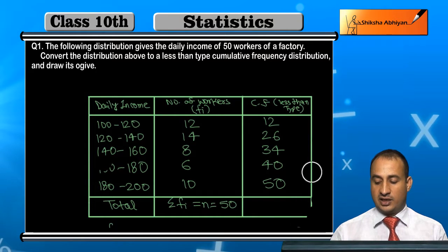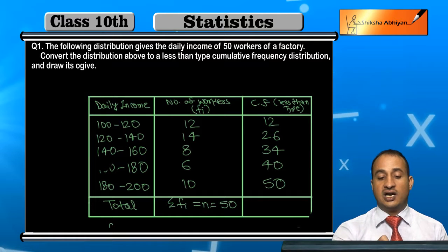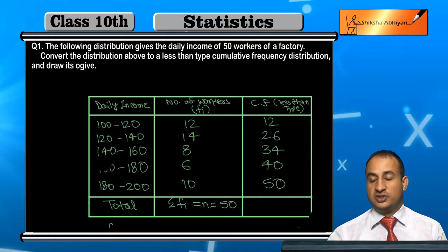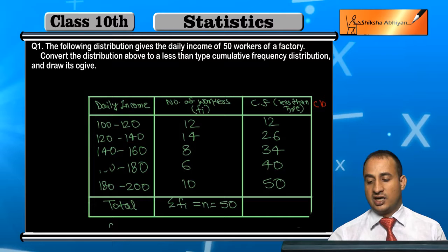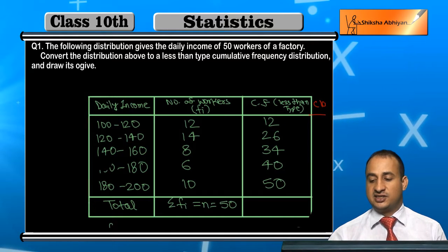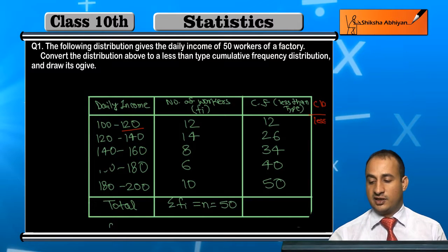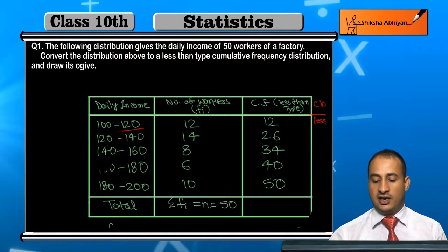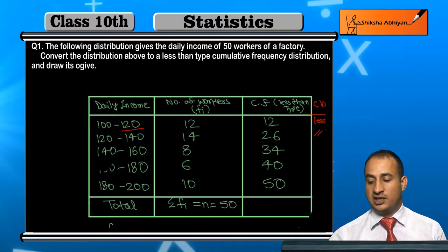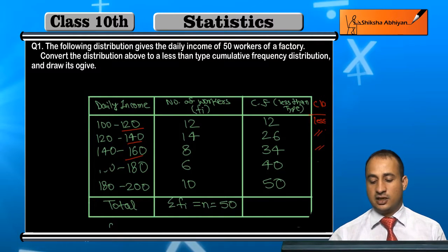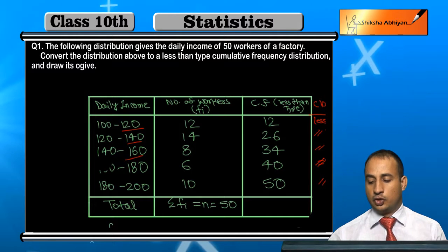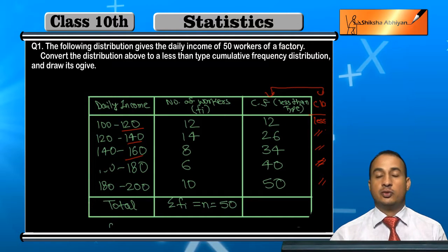This is the less than type cumulative frequency table. We can see that these data represent the less than type cumulative frequencies, starting with less than 120 and so on.